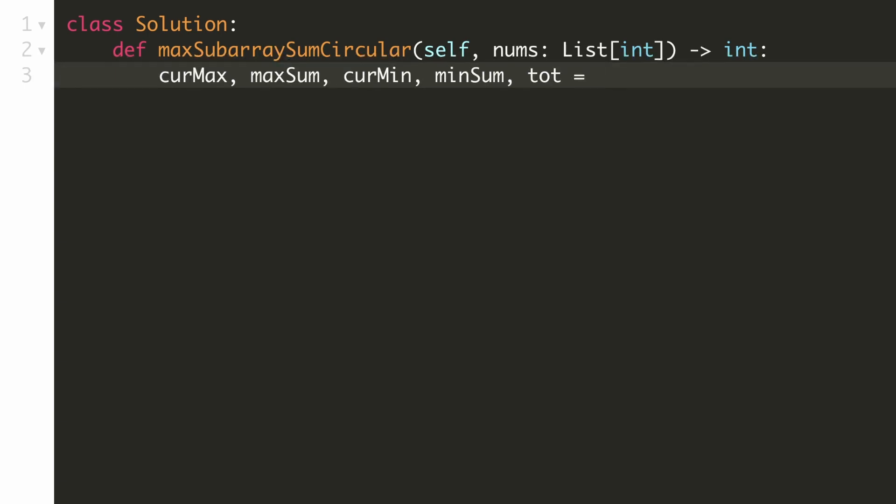We'll initialize the current maximum and the maximum sum to be minus infinity. And we'll initialize the current minimum and the minimum sum to be plus infinity. And the total sum will be initialized to zero.